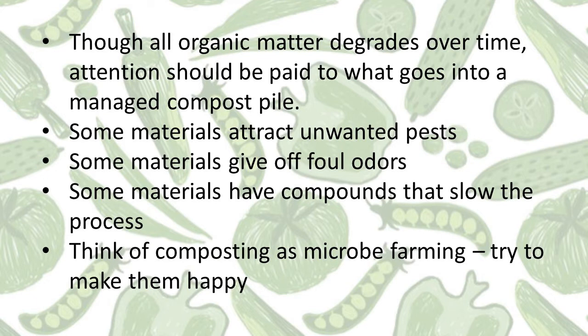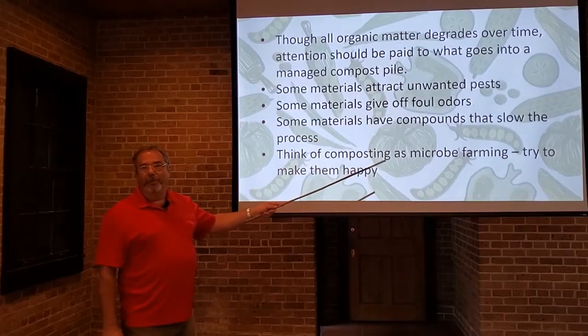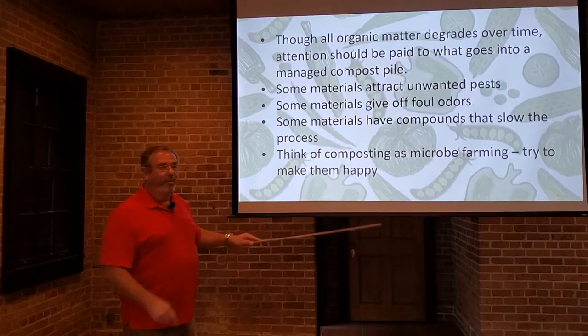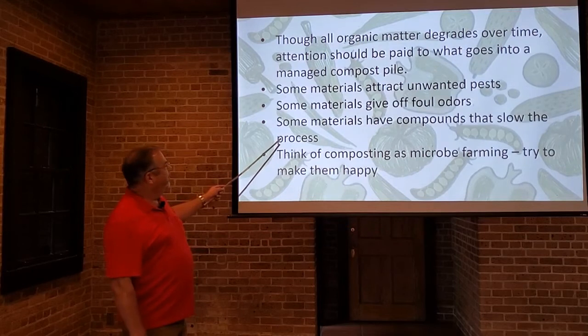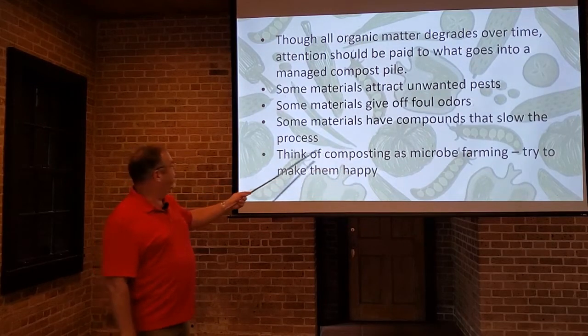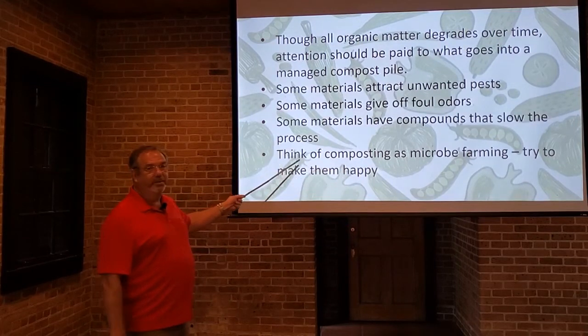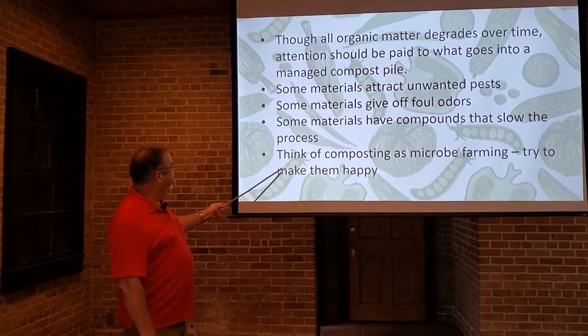Some materials attract unwanted pests, so we want to avoid those materials. Some materials give off foul odors — we don't want that in our compost pile. Some materials have compounds that slow the process, so again, we want to keep those out.